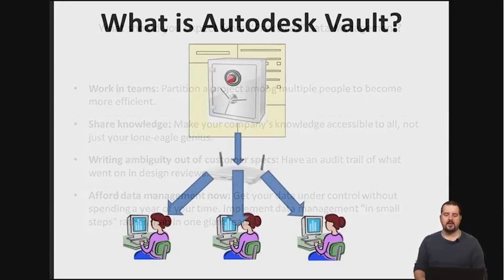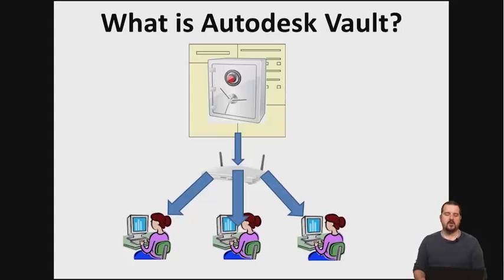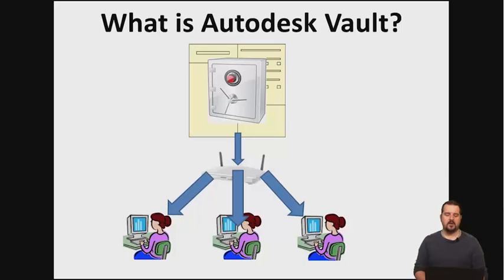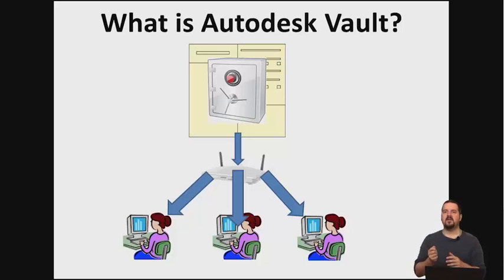Vault is a true client-server application that allows users to manage and control their data in a secure, centralized location. Importantly, you never work on data directly on the server — even if you open something read-only, that data is copied down to your local machine and you work from it there. Data is copied locally and you check it out when you want to work on it, giving you controlled copies. If Susie checks something out, you can see that she has it checked out and cannot edit the document until she checks it back in.